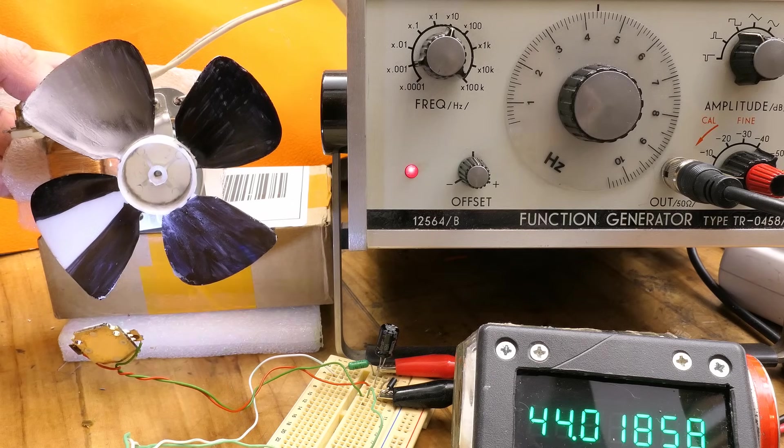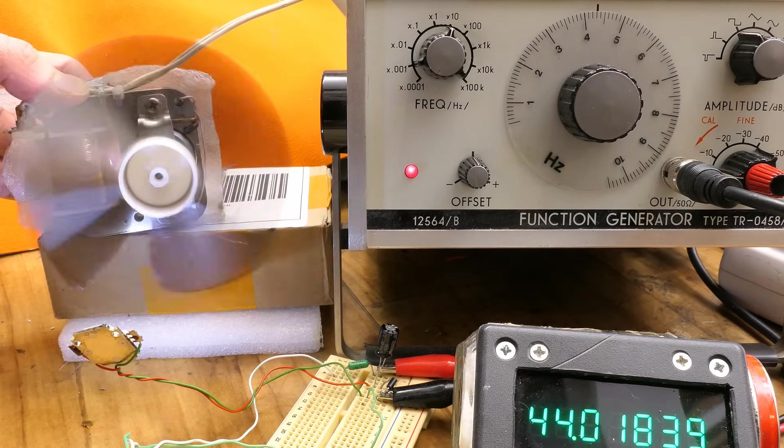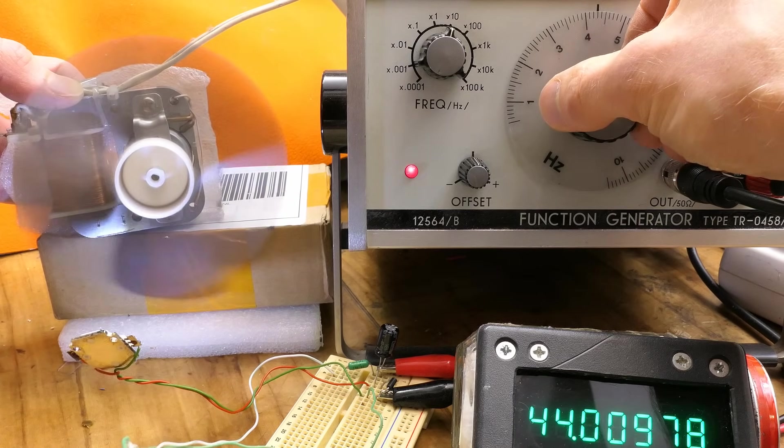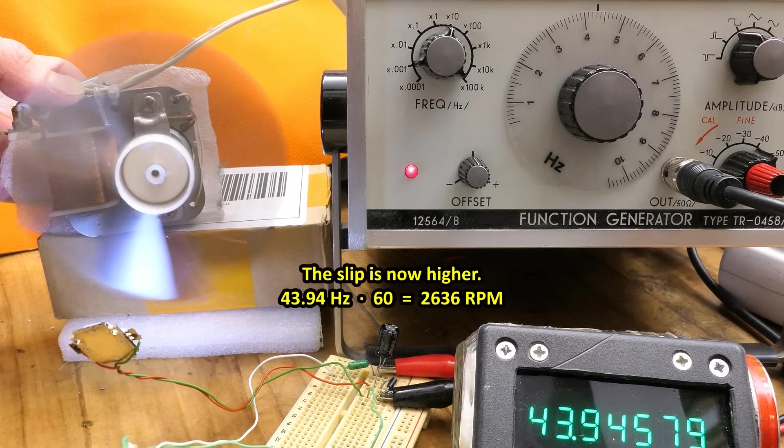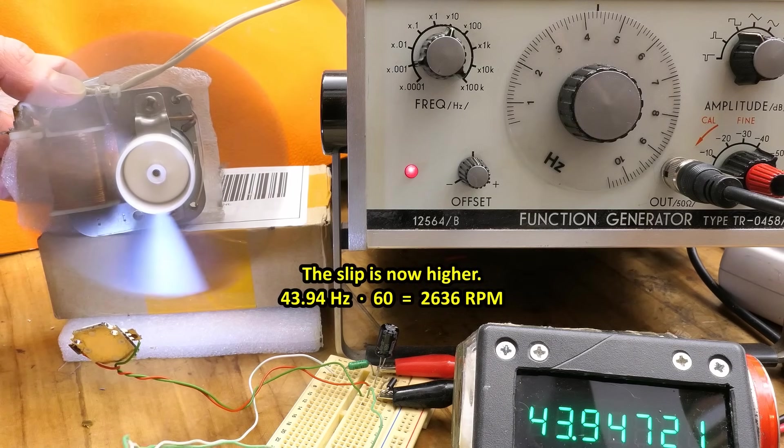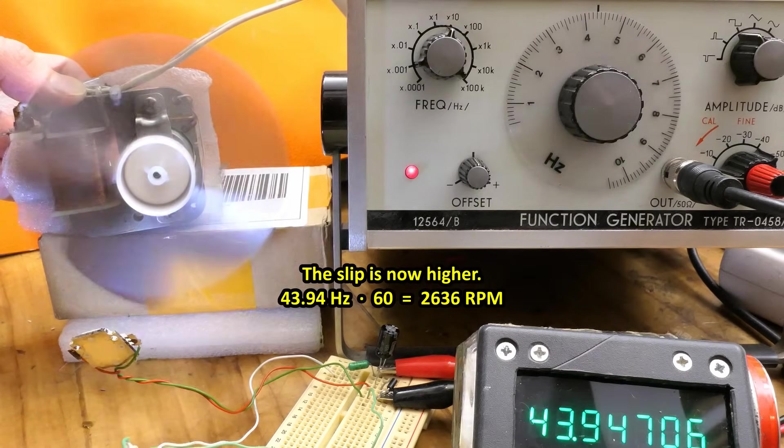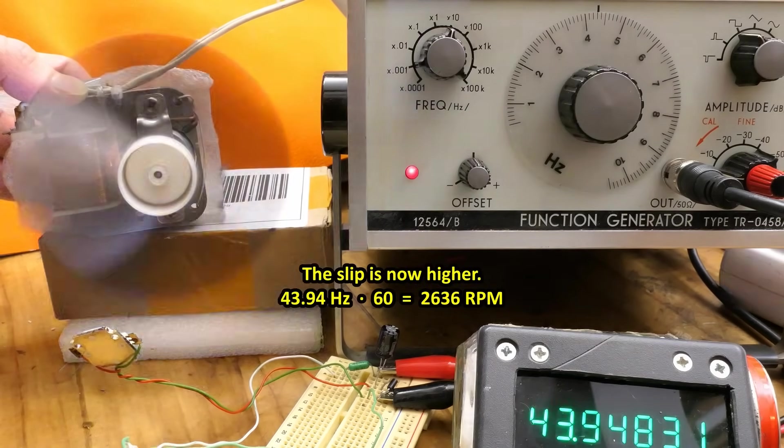And when the motor is loaded using fan blades, for example, now it's much harder to see, but it actually synchronizes at about 43 hertz, 44. When an asynchronous motor is loaded, it runs slower, of course.